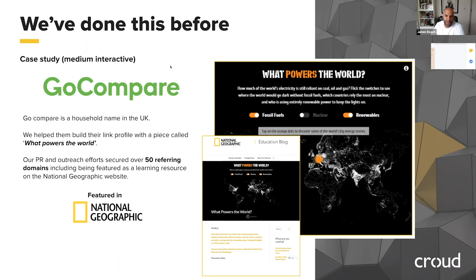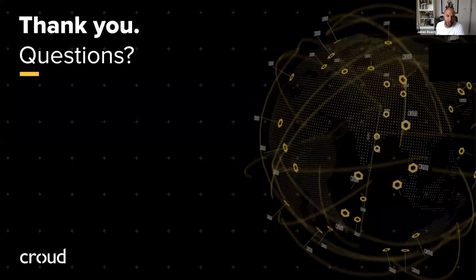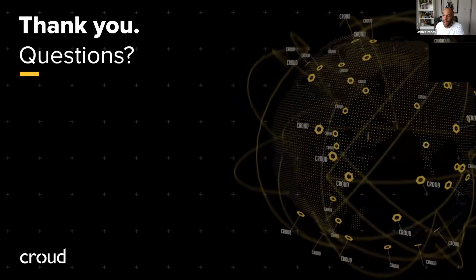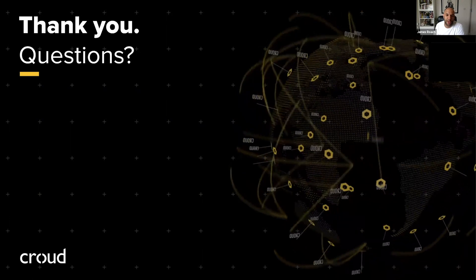Lastly, we did a piece for GoCompare called What Powers the World, looking at the different fuel sources countries around the world use. We created an interactive map where you could toggle fossil fuels, nuclear fuel, or renewables, and depending on which option you selected, it would highlight which countries use those energy sources. This got 50 referring domains, and something we weren't expecting was that National Geographic included it on their educational blog, which we were quite proud of. That brings us to the end of the presentation. My name is James Roach, Head of Content and Creative at Crowd — if you want to get in contact, you can reach me at james.roach@crowd.com. Thank you very much.